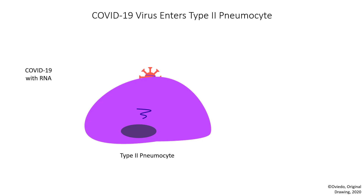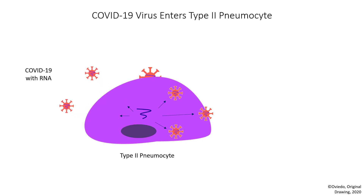Once inside the cell, it can then use the cell's resources to make more viruses. These viruses can then leave the cell and go on to infect other cells, or go out through someone's nose or mouth into the environment and infect another person.